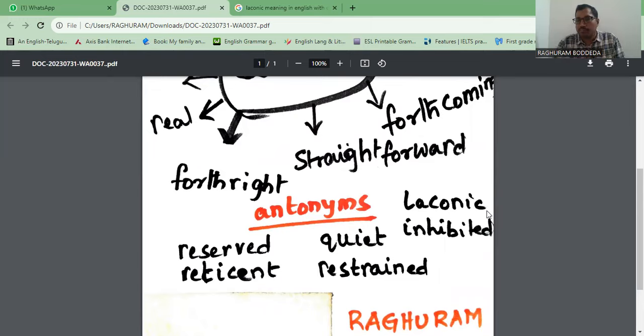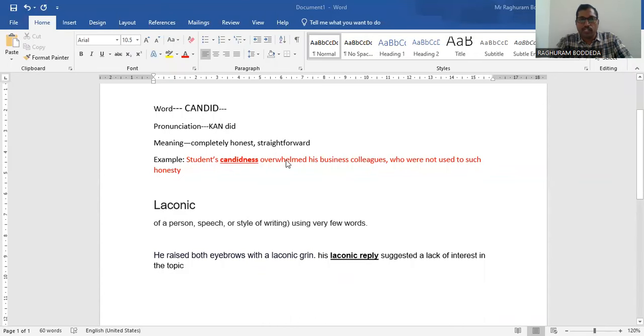Let me give you some examples of how we can use both synonyms and antonyms. Here you can see this one. I'm just sharing the screen now. You can see the word 'candid.' The pronunciation can be candid, mostly we are giving this kind of meaning: completely honest and straightforward.